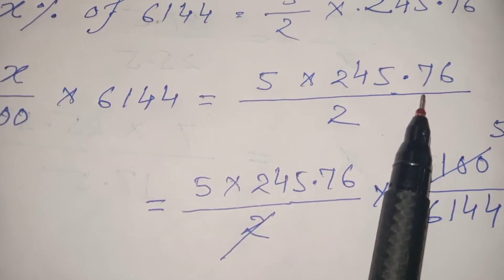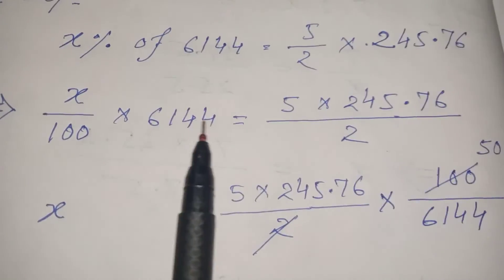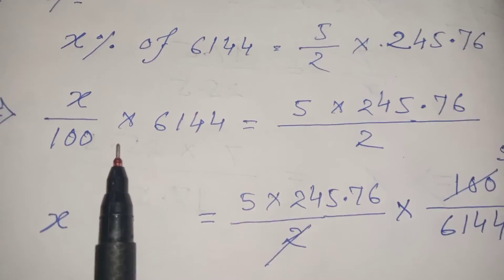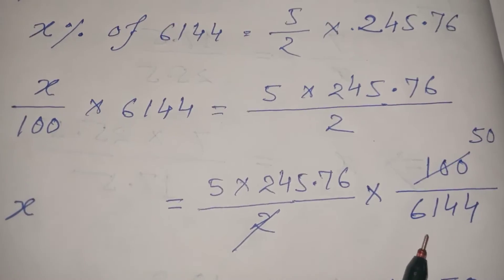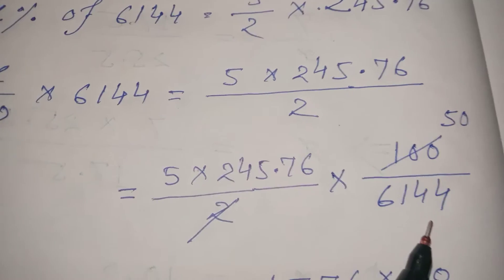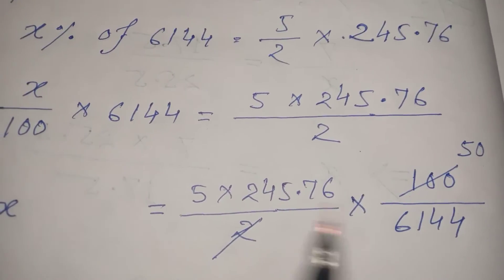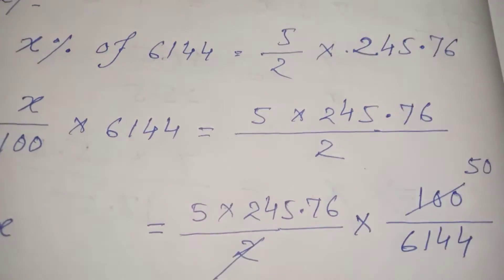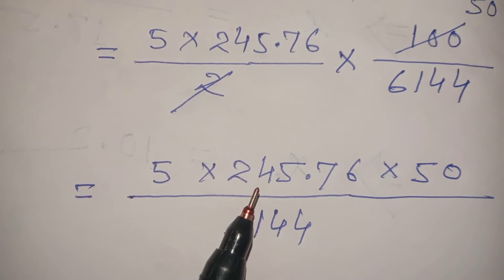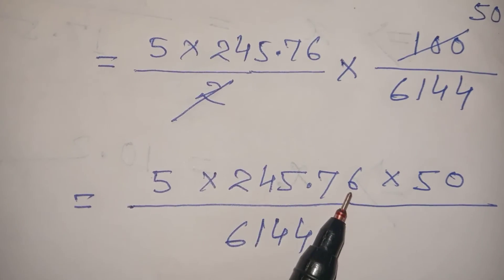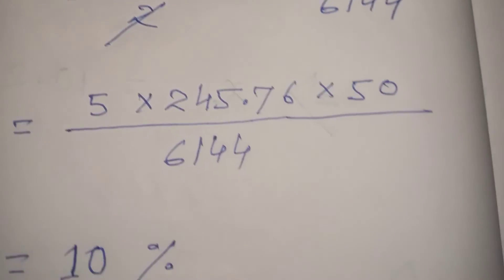Rearranging to solve for x: multiply both sides to get 100/6144 on this side. This equals 5 × 245.76 × 50 divided by 6144.